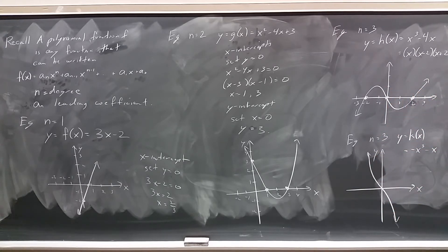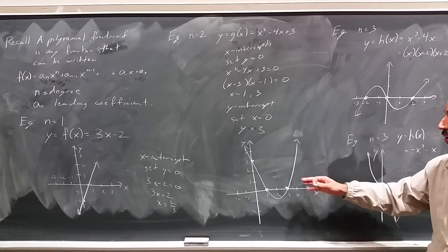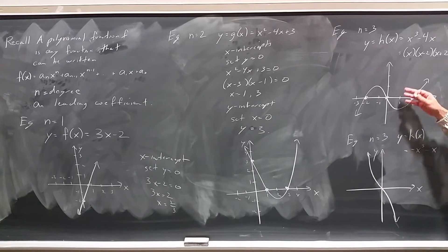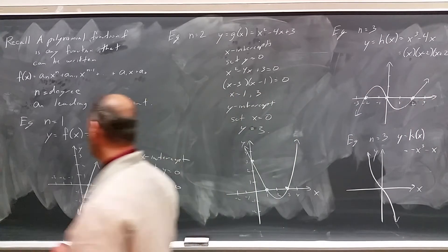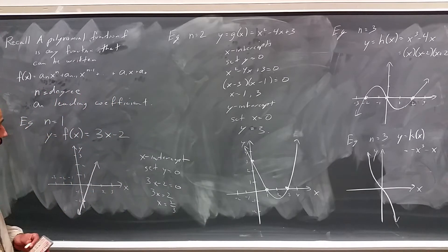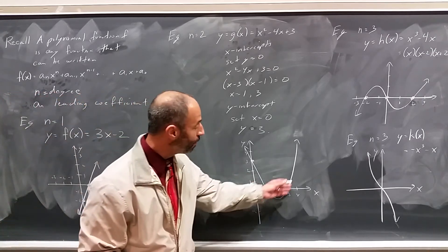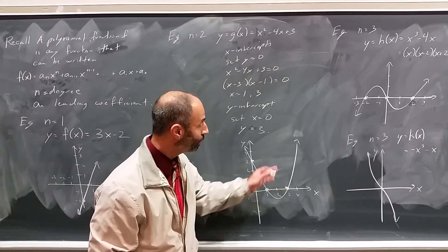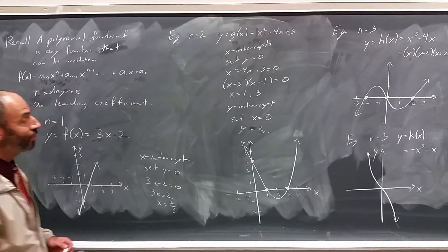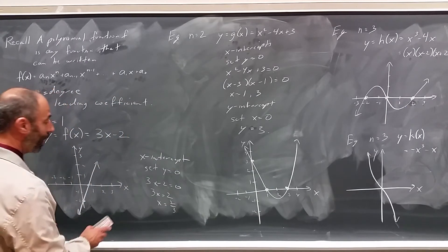And so we have four examples of polynomials on the blackboard: one of degree one, one of degree two, and two of them of degree three. Now I want you to notice some commonalities of all these. For one, each of these graphs can be drawn without picking up your, in this case chalk, from the blackboard. All of these graphs are in fact continuous, and all graphs of all polynomials are continuous, so it has no breaks.